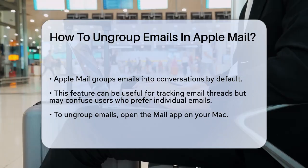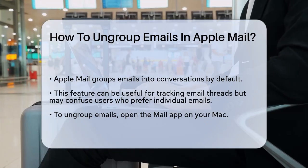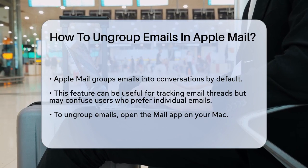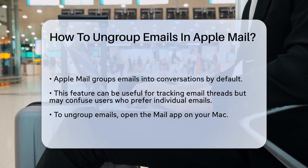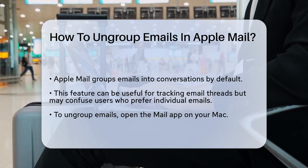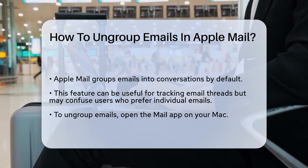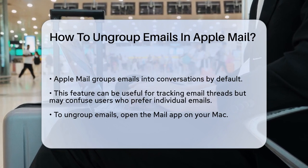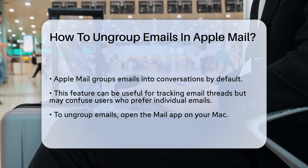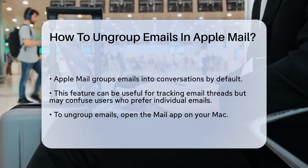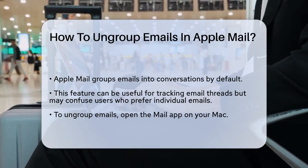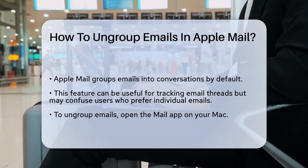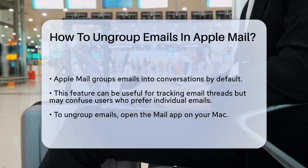First, you need to understand that Apple Mail groups emails into conversations by default. This can be helpful for following a thread, but it can also be confusing if you prefer to see each email separately. To ungroup these emails, you'll need to make a simple change in the Mail app settings.